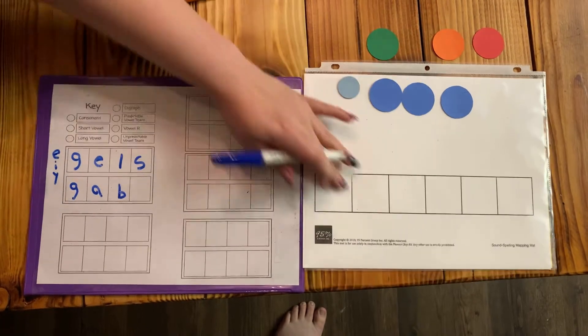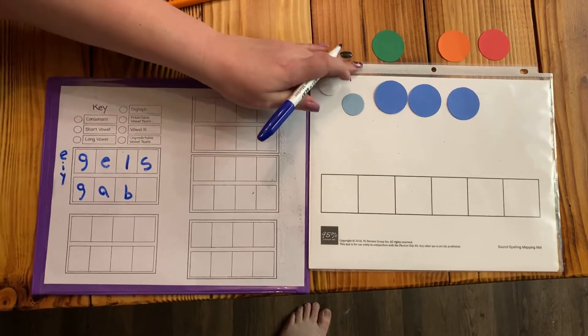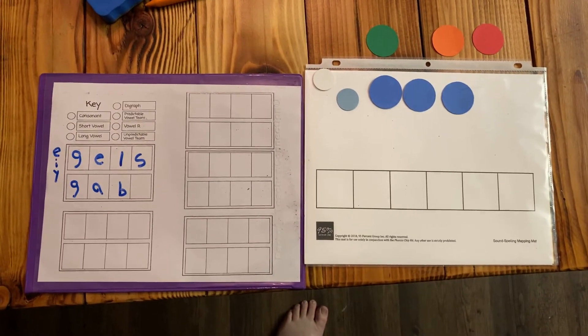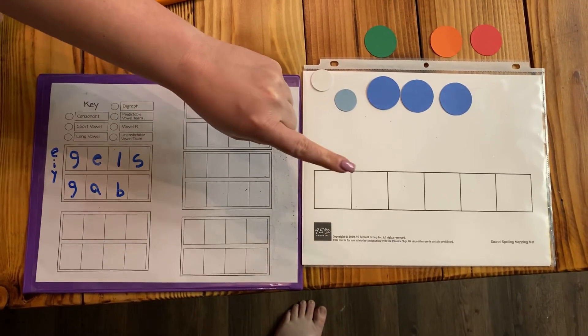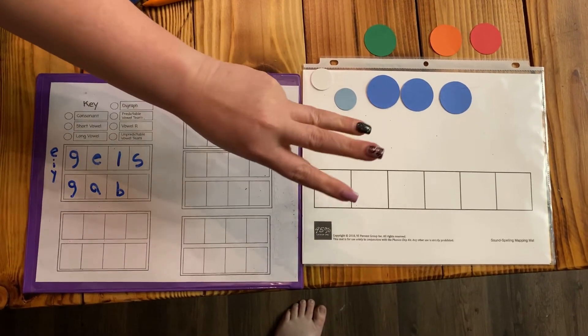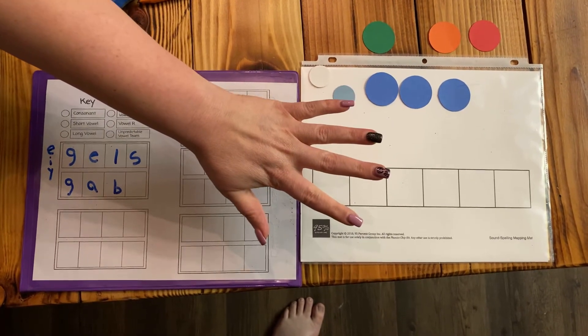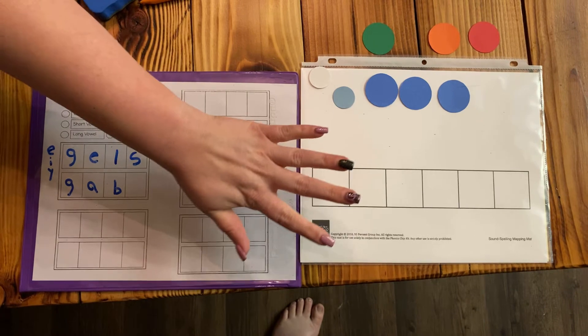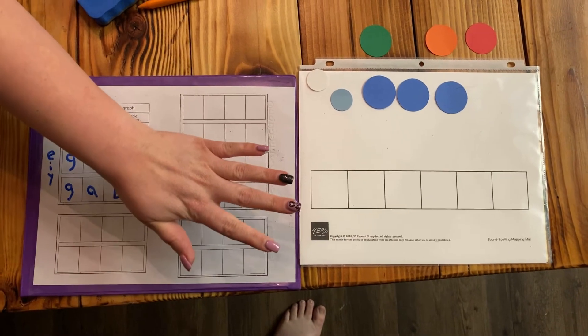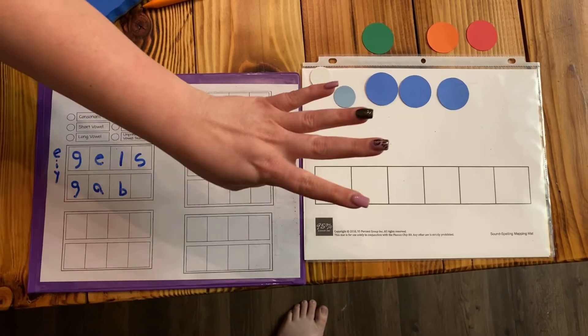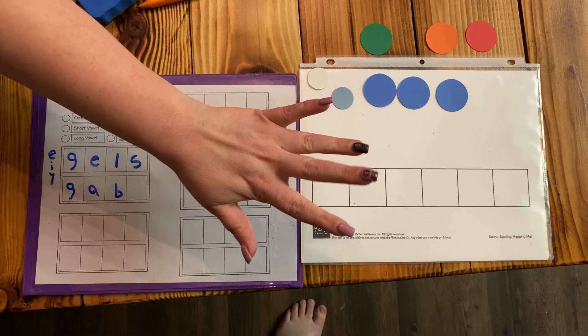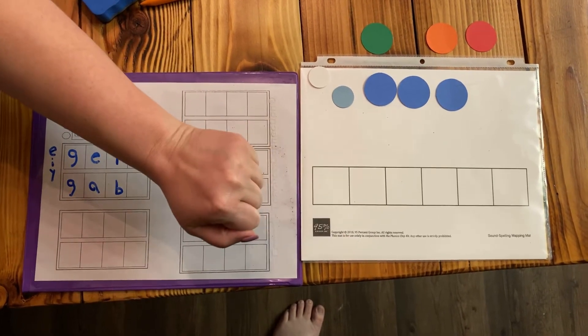Let's try a couple more. The word is magic. Magic: m, a, j, i, k, magic. This one has five sounds, friends. Let's try it. Can you try it? M, a, j, i, k, five sounds.